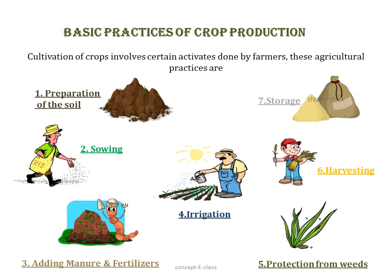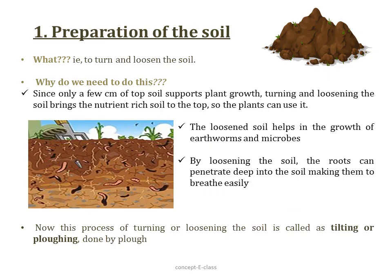Next we'll see the basic practices of crop production, which is a very important part of the chapter. In agriculture, that is the cultivation of crops, certain activities are done by farmers over a period of time. These agricultural practices are: first, preparation of soil; second, sowing; third, adding manure and fertilizers; fourth, irrigation; fifth, protection from weeds; sixth, harvesting; and seventh, storage.